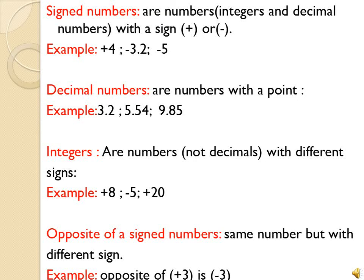Opposite of signed numbers — حتى في أسئلة بتجينا. For example: write the opposite number of plus 5. شو يعني opposite of signed numbers? بيكون نفس الرقم but with different sign. For example: opposite of plus 3 is minus 3. Opposite of plus 5 — بخلي الرقم مثل ما هو بس بغير له إشارته, يعني بعكس الإشارة. إذا كانت plus بحطه minus, وإذا كانت minus بحطه plus, على شرط أنه أنا أخلي نفس الرقم. Opposite of plus 5 is minus 5.